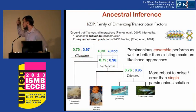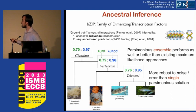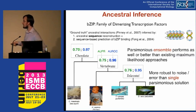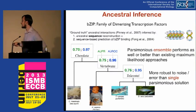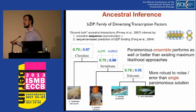For ancestral inference, this work was first done by Pinney et al. in 2007 using the BZIP family of dimerizing transcription factors. This family has a short region of sequence that strongly mediates interaction, so given the sequence you can predict the interaction and get putative ancestral networks via ancestral sequence reconstruction. Using that as ground truth, our framework achieves fairly high recall of these ancestral networks. In general, the parsimonious ensemble performs as well as and sometimes better than existing maximum likelihood approaches, and is much more robust to noise than single parsimony solutions.